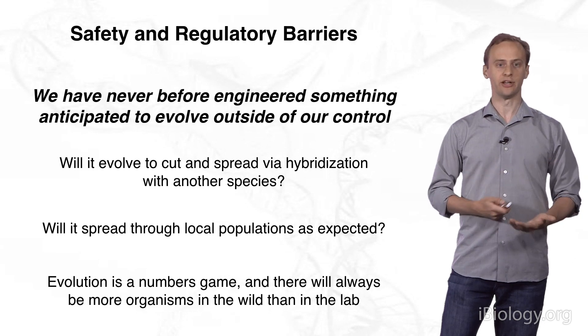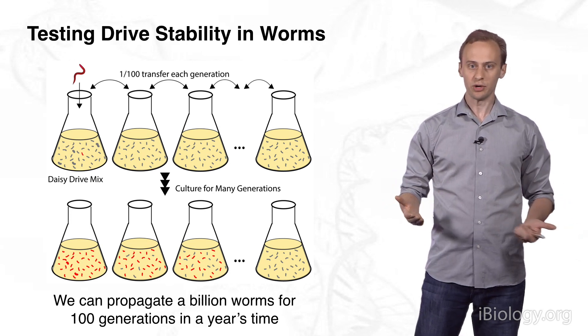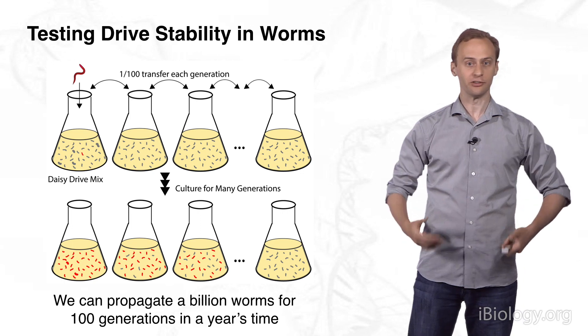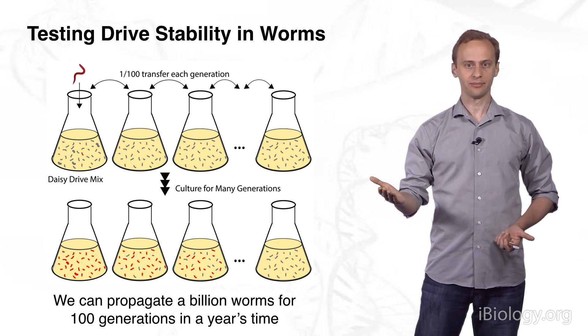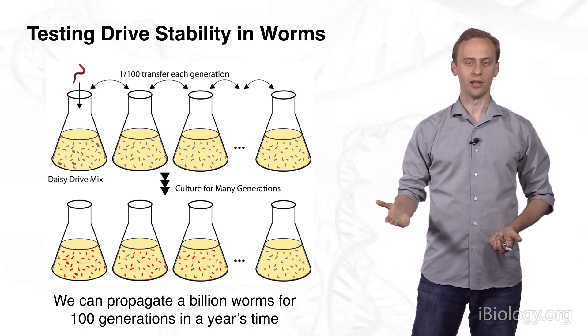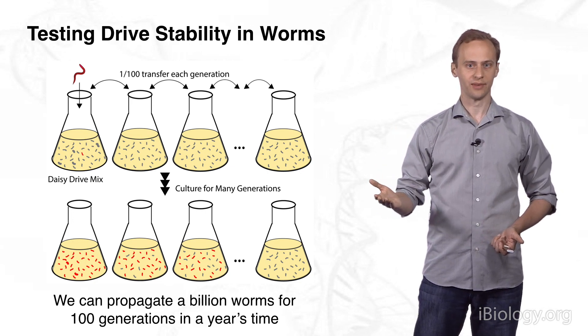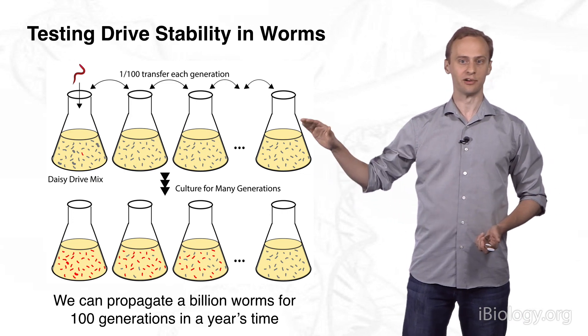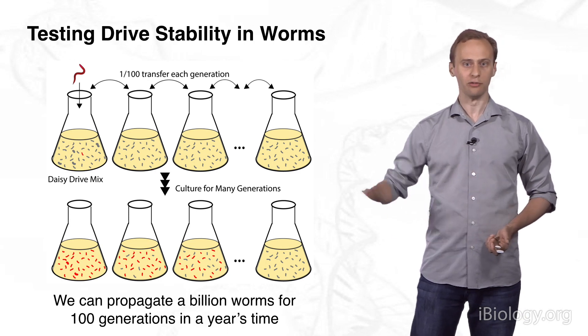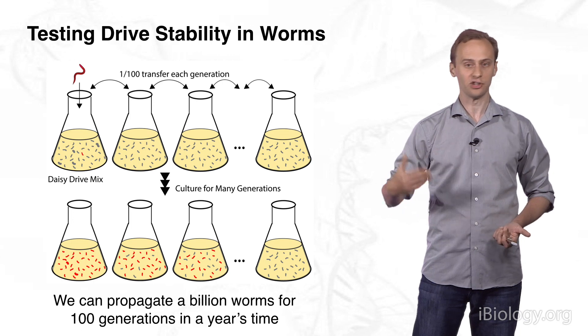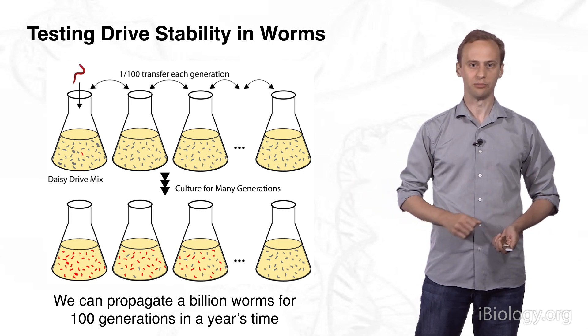My group is attempting to develop a system capable of answering these questions using nematode worms, which reproduce every three days and can be grown in populations of billions. For example, if we're interested in determining whether a daisy drive system is in fact stable and localized, then we can introduce a handful of daisy drive worms into a large population and observe, as the drive spreads over time, using a fluorescence marker. But we wouldn't expect that marker to show up in all of the worms, because this is supposed to be a daisy drive. It's supposed to run out of genetic fuel and stop. If it does spread to all the worms, we'll know that something went wrong, and that drive system is not safe enough to use in a wild population.